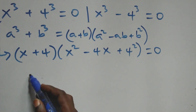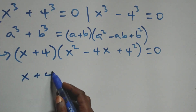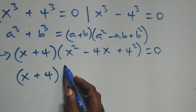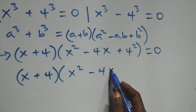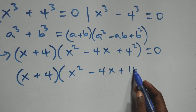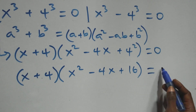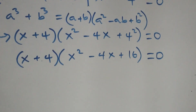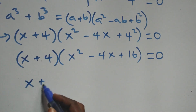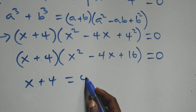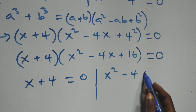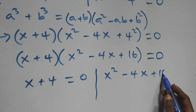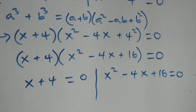This is the same as x plus four, into brackets, times open brackets x squared minus four x plus sixteen, close brackets, equals to zero. And here we have two possible cases: first, x plus four equals to zero, or we have x squared minus four x plus sixteen equals to zero.